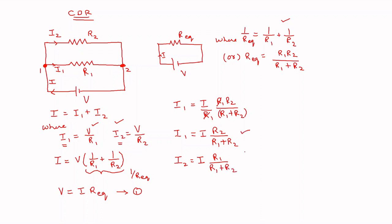This is the current division rule: if the total current coming to a node is I, you can find the divided currents I1 and I2. The divided current I1 equals the total current I into the opposite-hand resistor R2, divided by R1 plus R2. Similarly, to find I2, it is the total current I into the opposite-hand resistor R1, divided by the total resistance R1 plus R2.